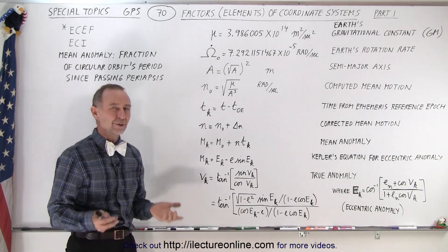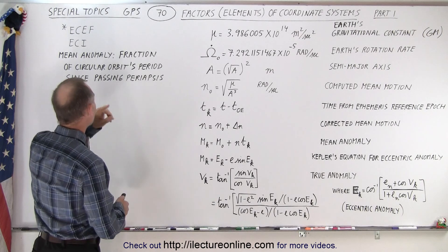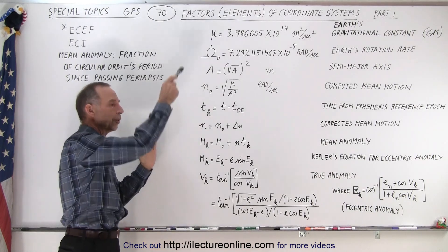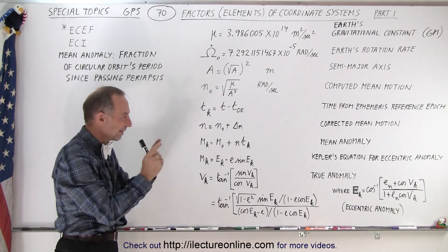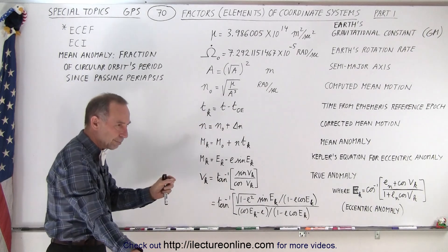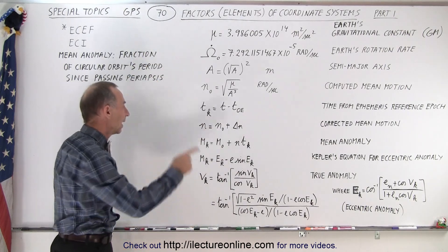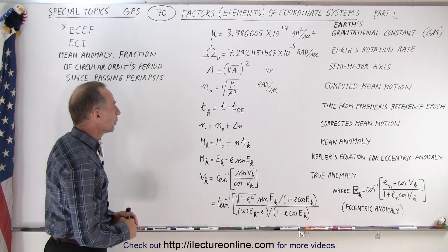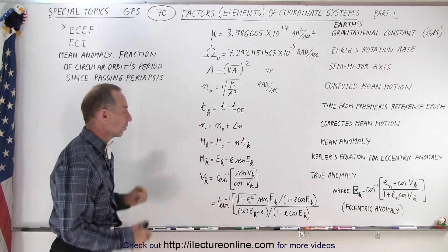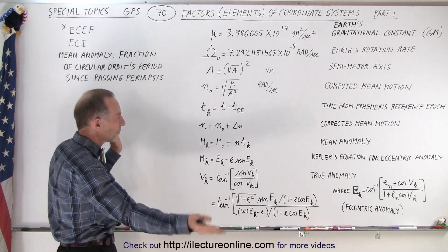Then we have what we call the mean anomaly. The mean anomaly is described as the fraction of the circular orbit's period since passing periapsis. We take the portion of the orbit in time compared to what it would take to do a complete orbit, timed since it passes periapsis — the closest point of the satellite to the Earth. We take that time difference and that's the fraction of the total orbit. Notice that it's adjusted by the corrected mean motion factor times the time constant t sub k, to make sure we're dealing with the right time period.